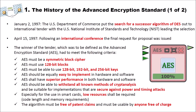With AES, they wanted to have it completely open to everyone and to be as transparent as possible, and I think this is really amazing. On April 15, 1997, following an international conference, the final request for proposal was issued. They designed this tender, and at that conference they even discussed what they really wanted and needed. The winner of the tender, which was to be defined as the advanced encryption standard or AES, had to meet the following criteria.